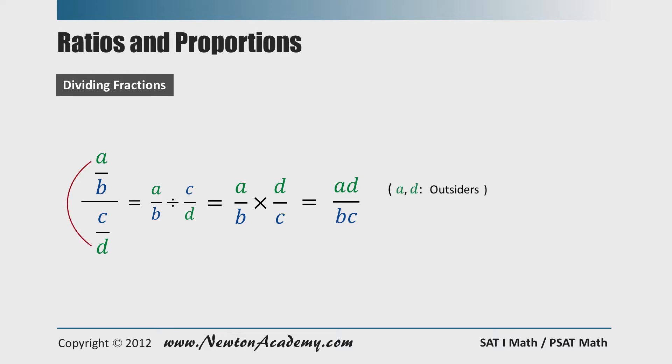You multiply A and D, which I call outsiders, and it goes in the numerator. We multiply B and C, which I call insiders, and it goes in the denominator. And please memorize this shortcut method, and trust me, it'll come in handy.